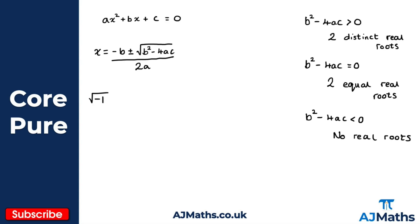The square root of minus one is a key concept. To recall basics: the square root of 4 gives plus or minus 2, because 2 squared is 4 and minus 2 squared is also 4. However, there is no real number that squares to give minus 1, so the square root of minus 1 is an imaginary number, and we represent it with the letter i. Note: in physics, j is traditionally used, but throughout A-level Further Maths we use i. So i equals the square root of minus 1 — this is called the imaginary unit.